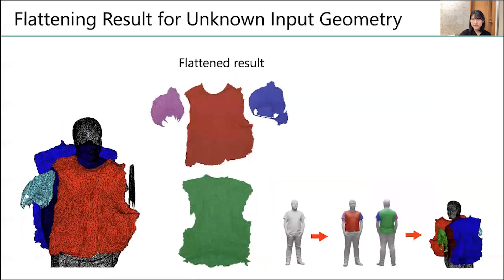These are the results for unknown input geometry. We could obtain garment pattern from an input geometry without any pattern information.